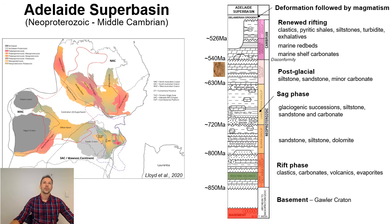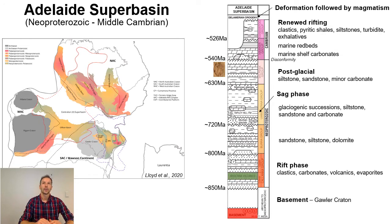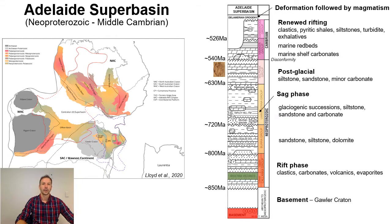After a bit of a disconformity, we move into the Cambrian with marine shelf carbonates, some red beds in the lower Cambrian, and then renewed rifting particularly in the Kanmantoo Trough, which saw immature clastics, turbidites, pyritic shales, siltstones and some exhalative horizons. This is followed by a phase of deformation and magmatism — the Delamerian Orogeny.